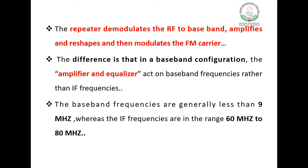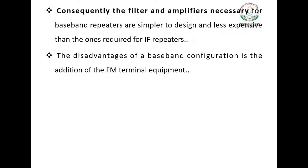This second configuration essentially accomplishes the same thing as an IF repeater. The difference is that in a baseband configuration, the amplifier and equalizer act on baseband frequencies rather than intermediate frequencies. Baseband frequencies are generally less than 9 MHz, whereas intermediate frequencies are in the range of 60 MHz to 80 MHz. Consequently, the filters and amplifiers necessary for baseband repeaters are simpler to design and less expensive than those required for IF repeaters.